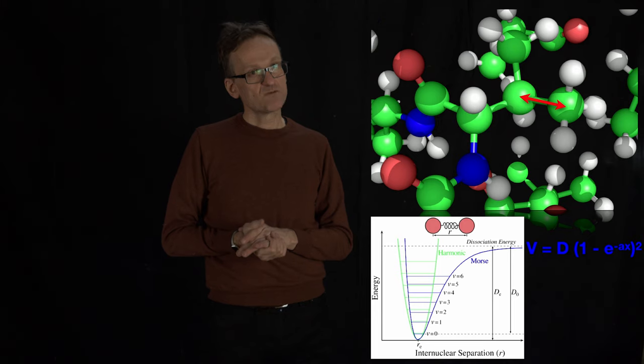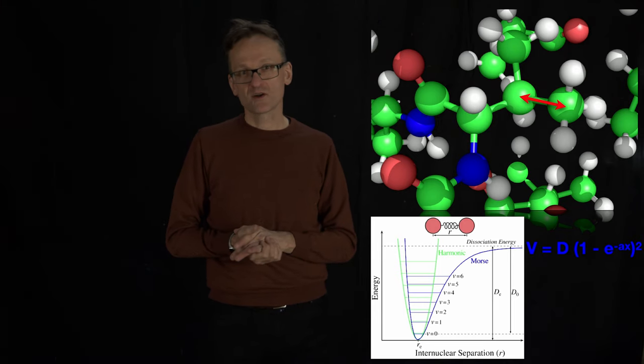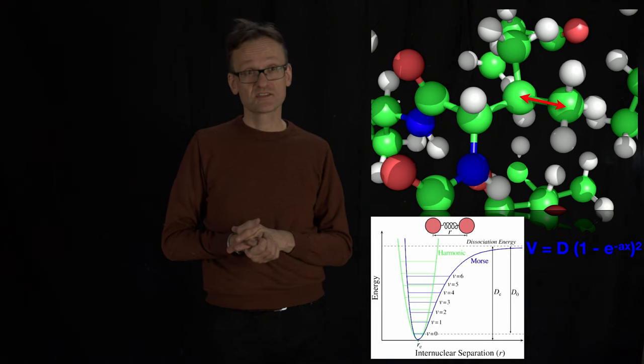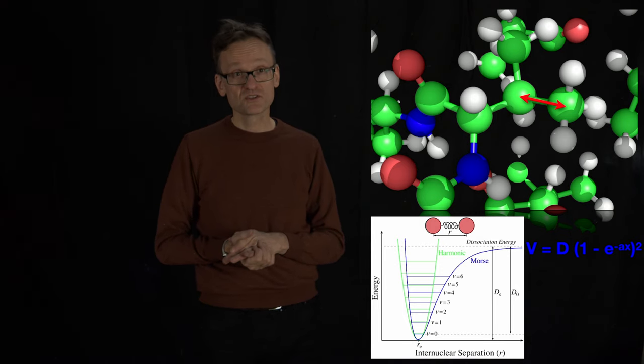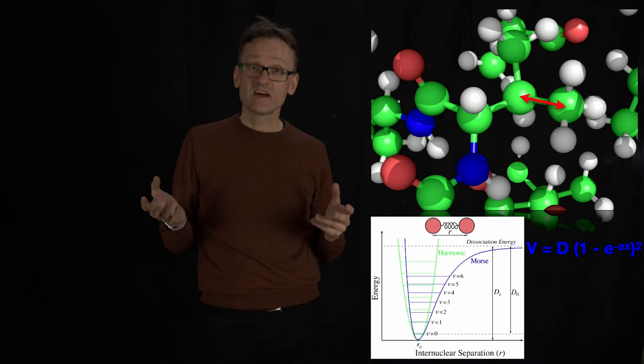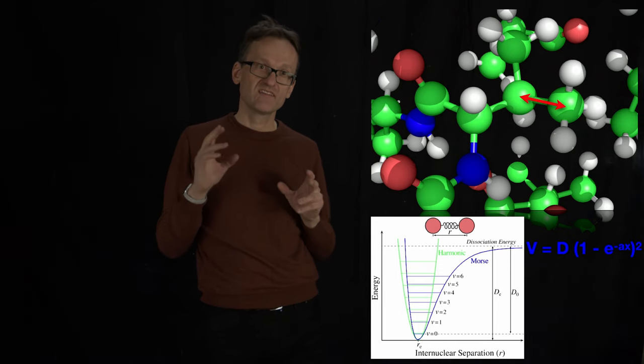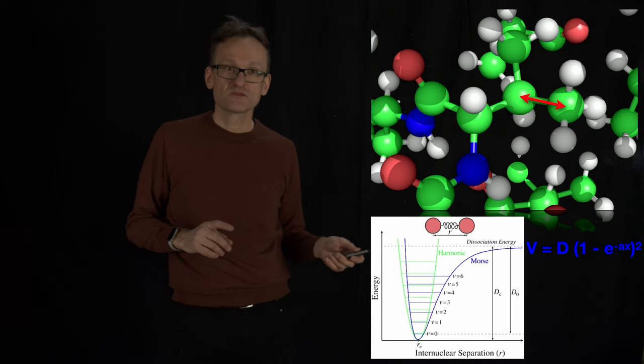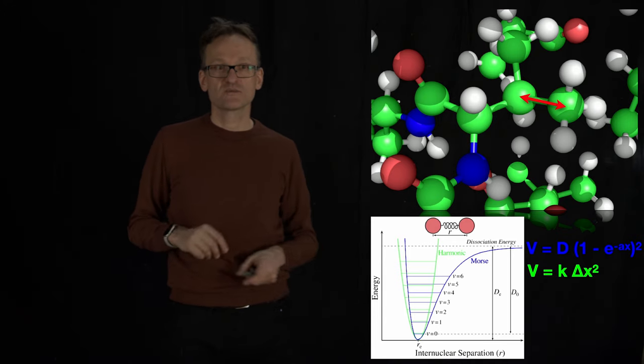Well it does happen once in a blue moon for very specific chemical reactions. But typically, when a molecule is stable in an equilibrium state, it's neither going to form nor break bonds. I would argue that accounts for 99% of what we do. And if that's 99%, we should optimize for that. So I'm going to take the approximation and make an even worse approximation.